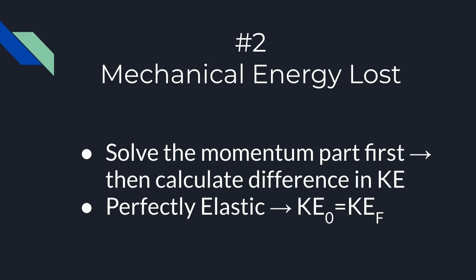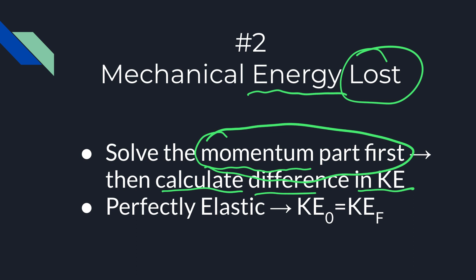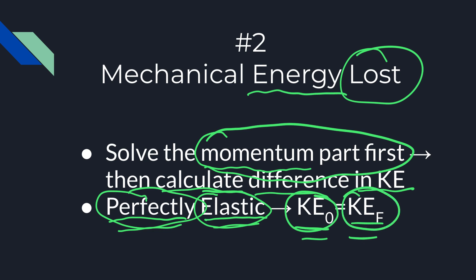The next question type you should expect to see is actually technically an energy question, but it's usually in the context of a momentum type of problem, and it's just to figure out how much energy is lost. The key for this is you solve the momentum part of the problem first, and then you calculate the difference in kinetic energies. Now, sometimes the kinetic energies will be the same, and when that's true, we call this a perfectly elastic collision. And there will often be questions where they start off saying the problem is perfectly elastic, and the question is essentially checking to make sure you understand that means your kinetic energies will be conserved.